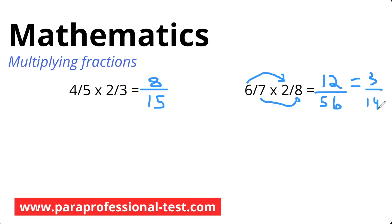But can that number be simplified further? 3 is a prime number and it doesn't go into 14, so it's simplified to its lowest term and we are finished. One more note about multiplying fractions: having or not having a common denominator does not make a difference. We simply multiply the top, multiply the bottom, and reduce or simplify the fraction.